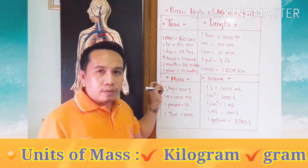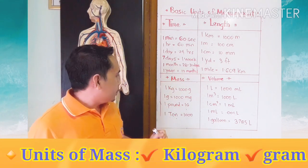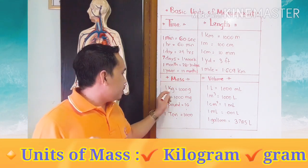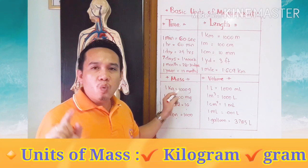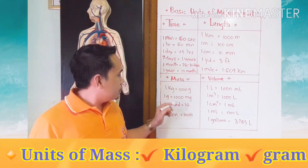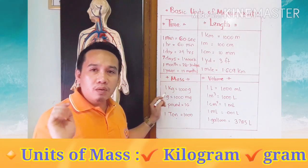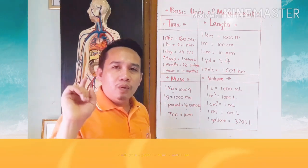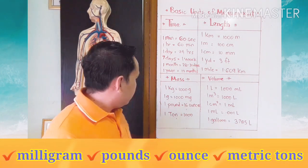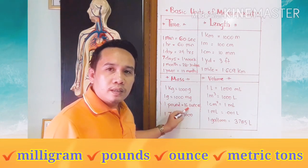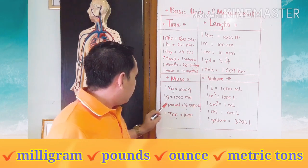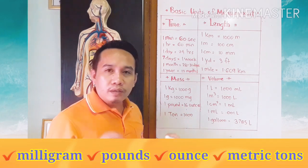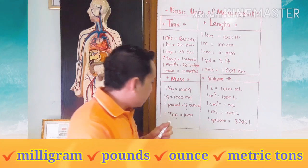Now let us move to mass. The indicators and units are: 1 kilogram is equal to 1,000 grams; 1 gram is equal to 1,000 milligrams; 1 pound is equal to 16 ounces; and 1 ton is equal to 1,000 kilograms.